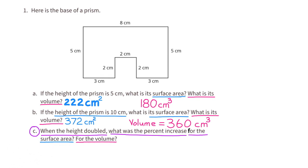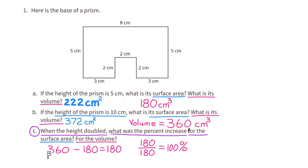Now we need to find the percent of increase for the volume. 360 minus 180 equals 180. So 180 divided by 180 shows that the percent of increase was 100%.